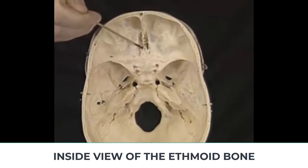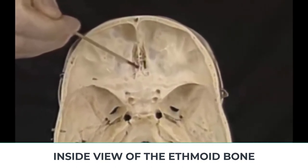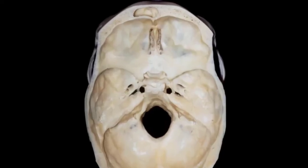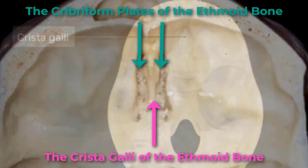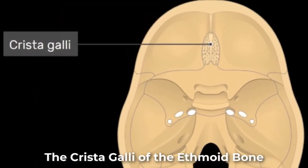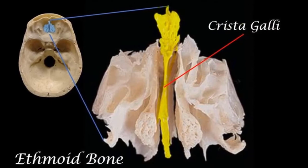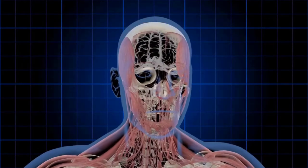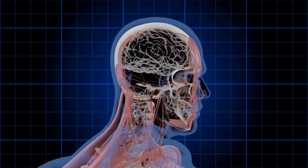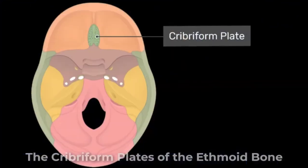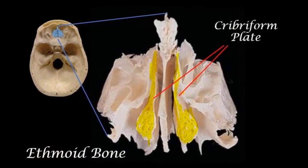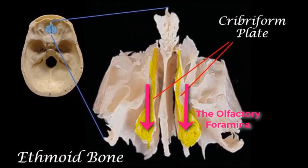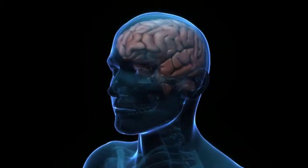In the cranial cavity, the ethmoid bone forms a small area at the midline in the floor of the anterior cranial fossa. This portion of the ethmoid bone consists of two parts: the crista galli and the cribriform plates. The crista galli, which means rooster's comb or crest, is a small upward bony projection located at the midline. This structure functions as an anterior attachment point for one of the covering layers of the brain. To either side of the crista galli is the cribriform plate — a small flattened area with numerous small openings termed the olfactory foramina. Small nerve branches from the olfactory areas of the nasal cavity pass through these openings to enter the brain.